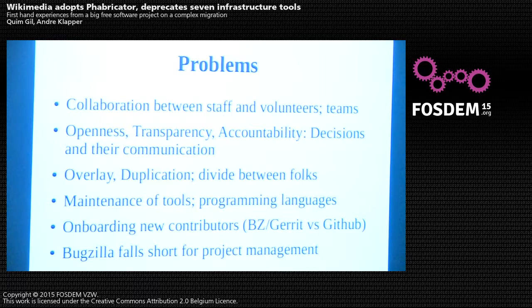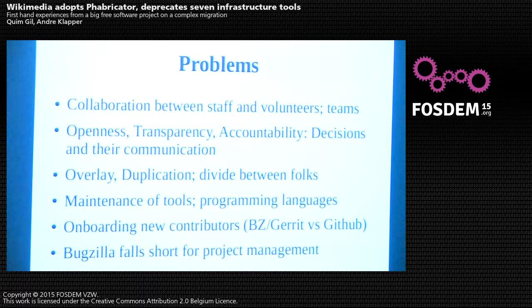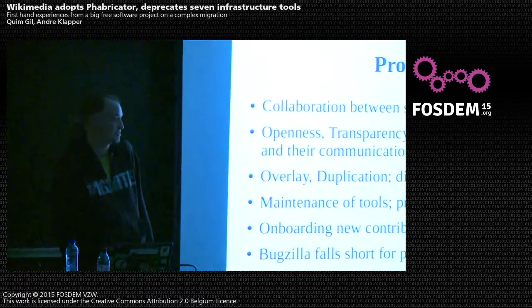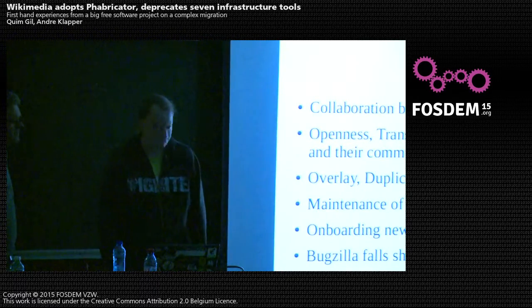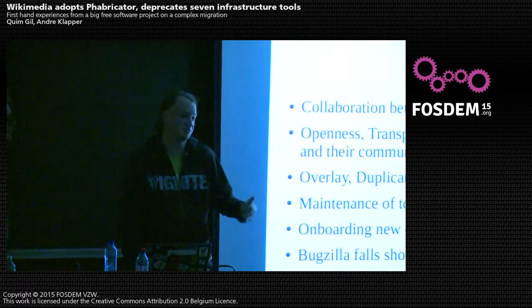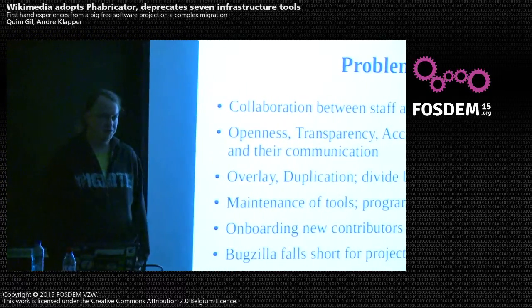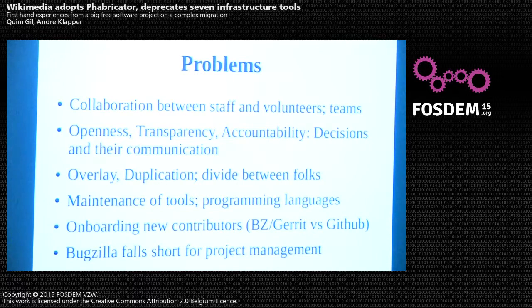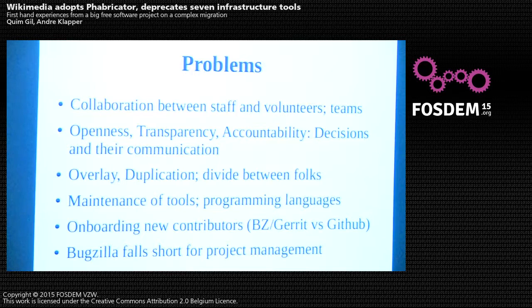You might see the problems with this setup. Collaboration between staff and volunteers and between teams was difficult. Communication, openness, transparency, accountability — for some things you needed a login; Mingle or Trello were harder to reach, and RT was described as a black hole. There was duplication and fragmentation. We had to maintain these scripts, things broke — for example, once we upgraded Bugzilla, the Gerrit notifications stopped working. Programming languages were also an issue: MediaWiki is mainly PHP, but these scripts were Perl and Java. Onboarding new contributors was hard, and people are nowadays used to GitHub. Bugzilla simply isn't for project management, so everything together slowed us down.